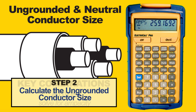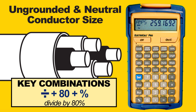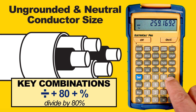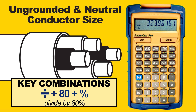The second step is to calculate the ungrounded conductor size. Since there will be four conductors in that RMC conduit, we have to adjust the ampacity by 80%, so we take this number and divide by 80%. The answer is 324 amps for the ungrounded conductors.